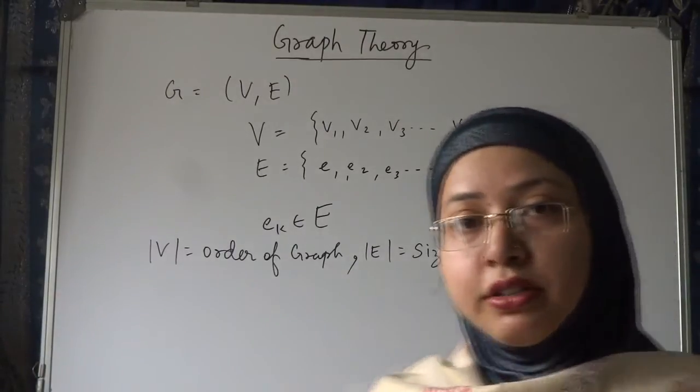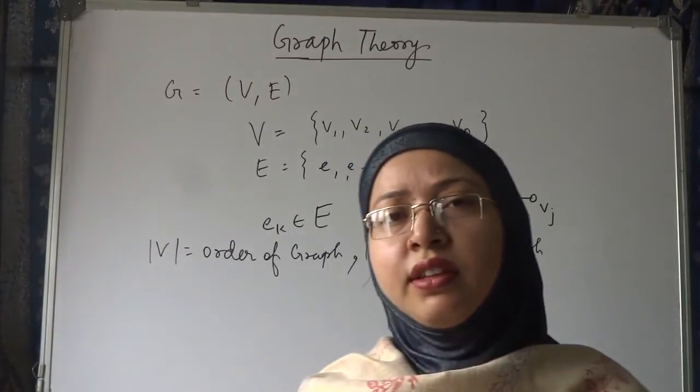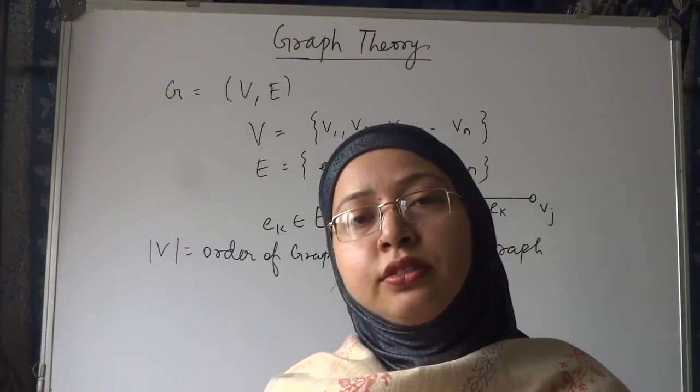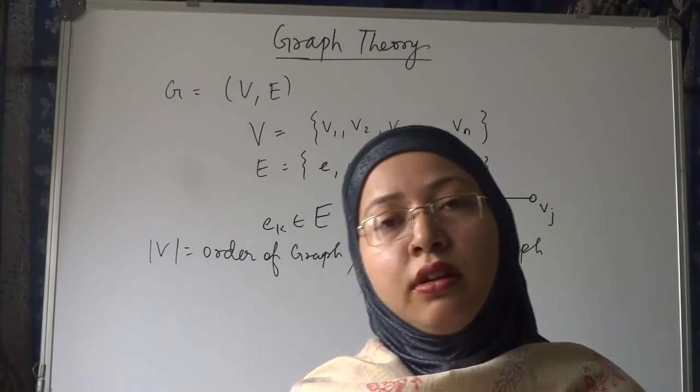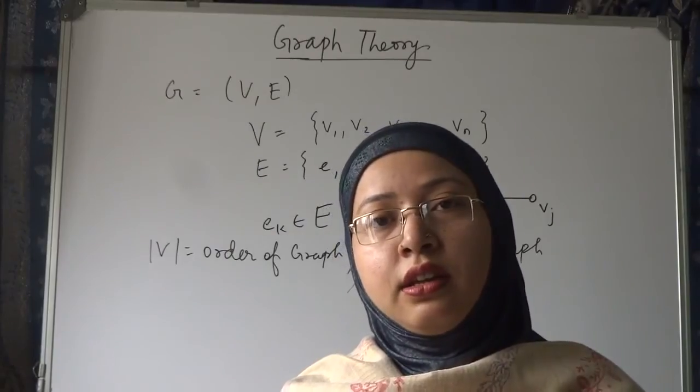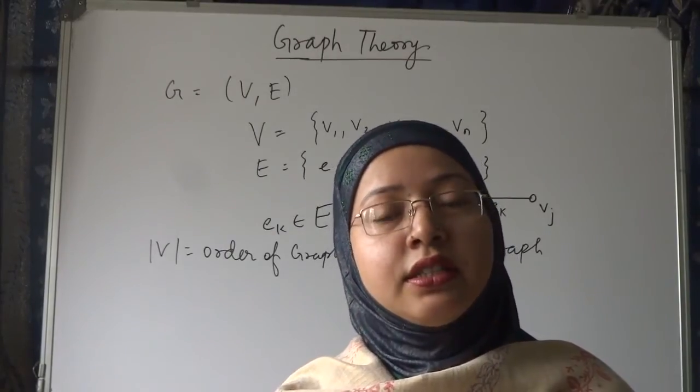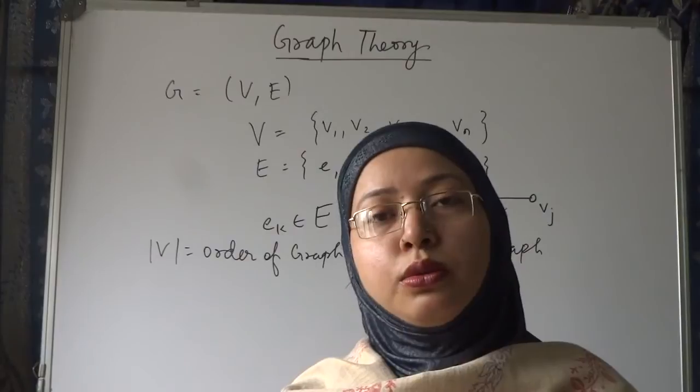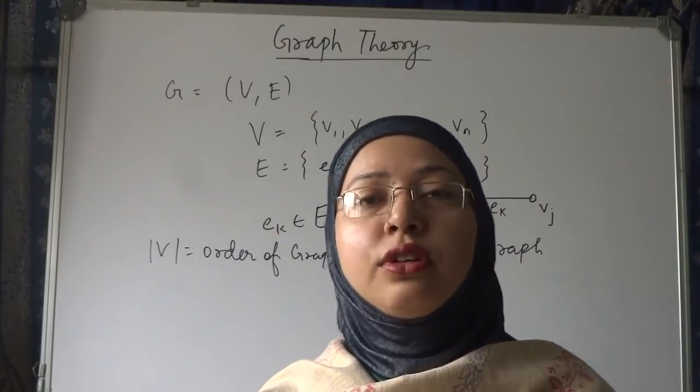And one important theorem about graph theory, that is known as the handshaking lemma. It tells that the sum of degrees of all the vertices is equal to twice the number of edges in your graph.